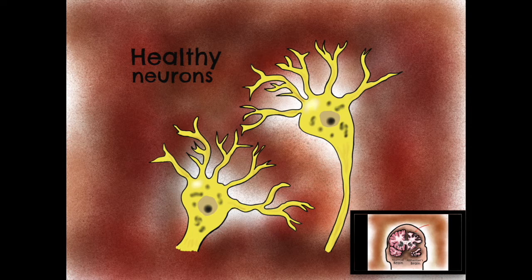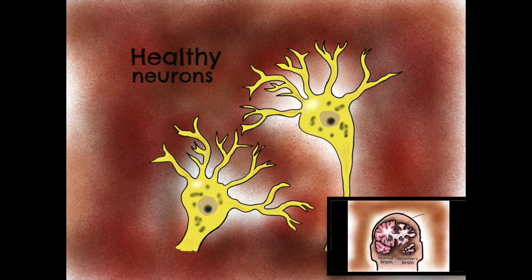In Alzheimer's disease, part of this process of APP cleavage becomes impaired, which results in progressive neuronal loss in selective parts of the cortex. Before we take a more detailed look at the mechanism underlying this neuronal death, let's examine the gross anatomical changes which take place in Alzheimer's disease.